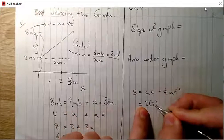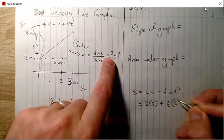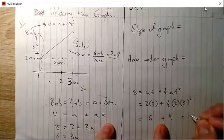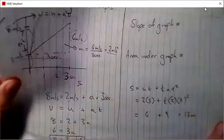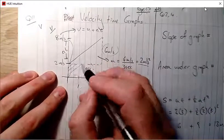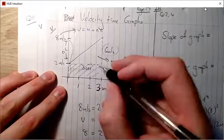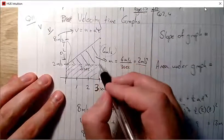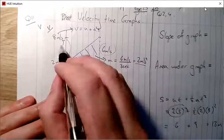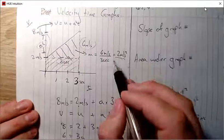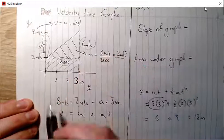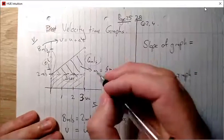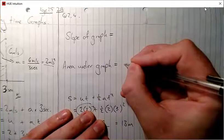Finding the distance: u is two, time is three, plus a half of acceleration two times three squared — that's six plus one times nine, giving thirteen meters. Coming back to the graph: u×t is the rectangular area at the bottom, and the triangle area is half the base times the perpendicular height — half of three times six equals nine. So the area under the graph equals the total displacement.